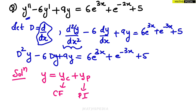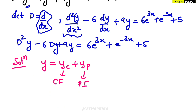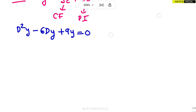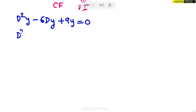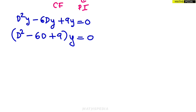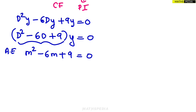To find yc, take the LHS part containing D and equate it to zero: D²y − 6Dy + 9y = 0. Factor out y: (D² − 6D + 9)y = 0. Now write the auxiliary equation by substituting m in place of D, giving m² − 6m + 9 = 0.